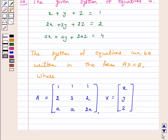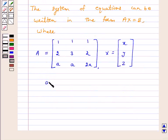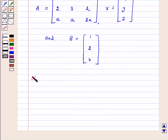B is equal to the column vector 1, 2, 4. Now we will first find out determinant A